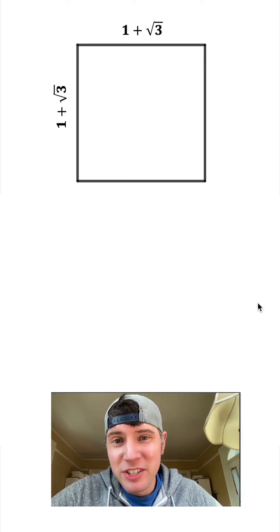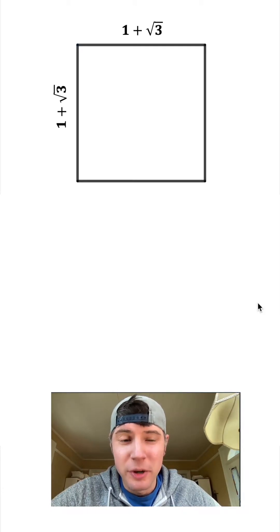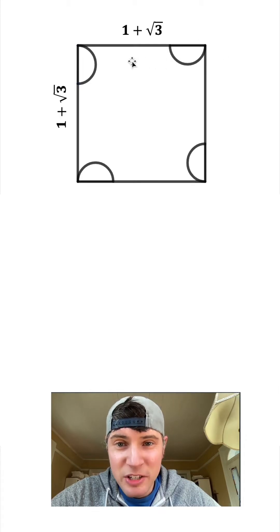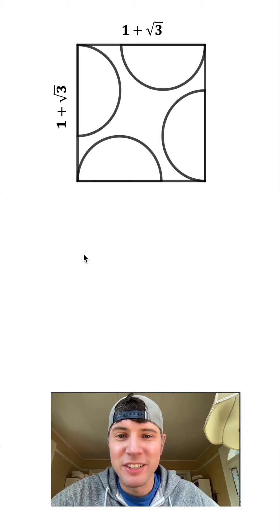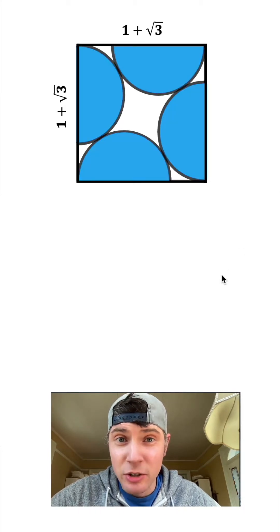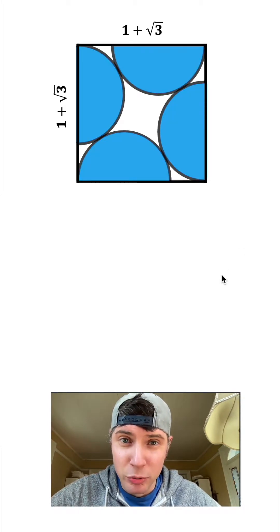Hey guys, so we got a square and let's make both sides 1 plus square root of 3. Then we throw congruent semicircles in every corner and let them grow until they intersect. If we paint these semicircles blue, what is the area of the blue region?